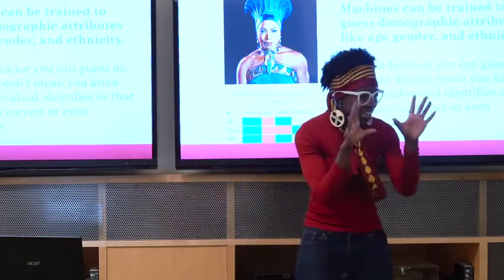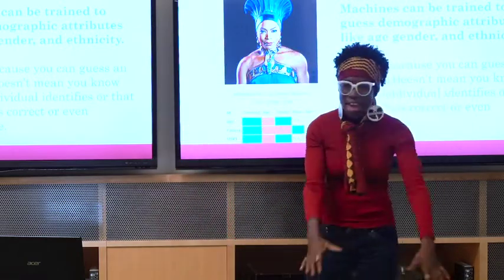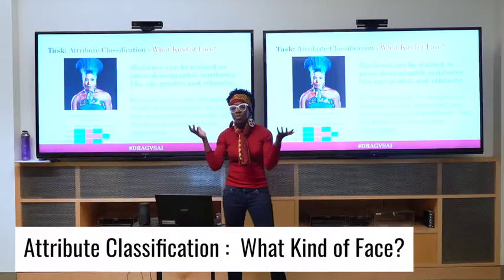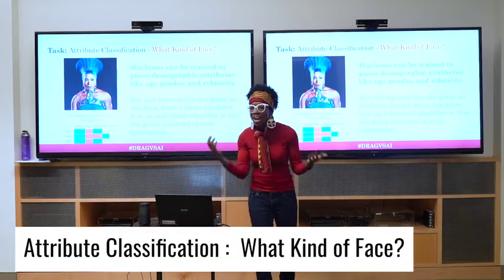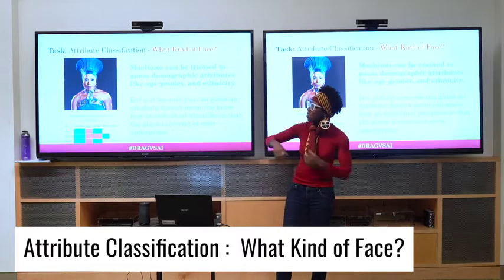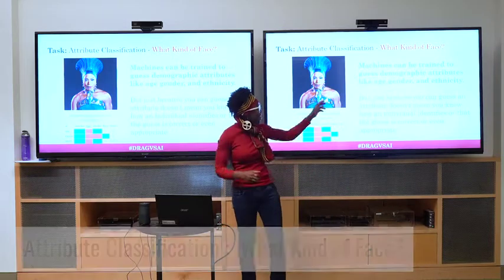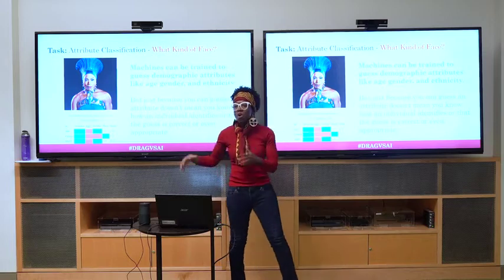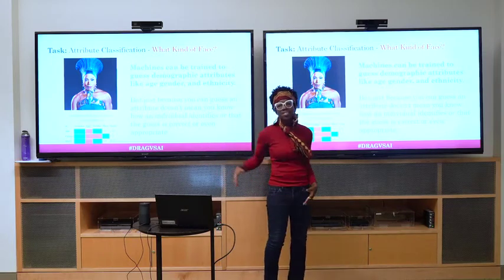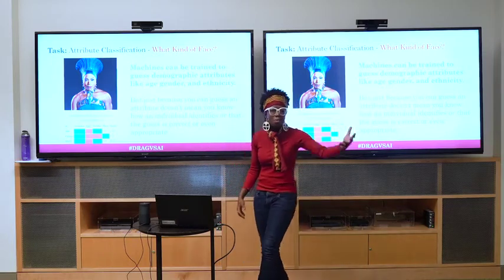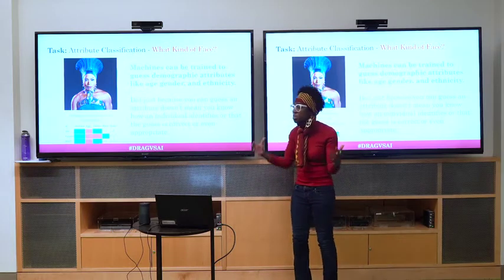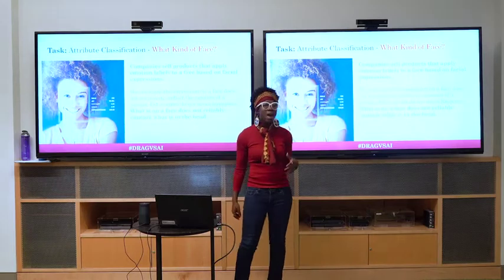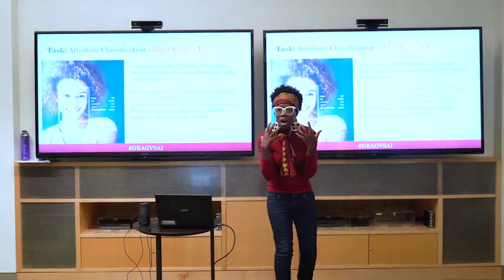Once you do face detection and you know there's a face, other kinds of tasks you can do are called attribute classification — what kind of face? I have a photo of Angela Bassett, Wakanda forever, where we're asking what kind of face does she have. Now you've detected a face and you want to maybe guess the age of a person, their gender, or even try to guess the ethnicity. Some companies try to guess the emotion of a face.